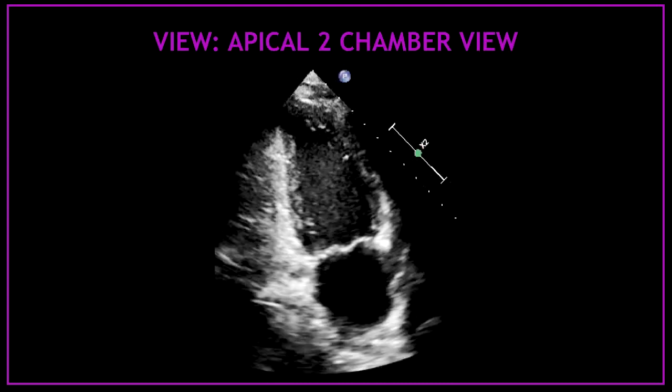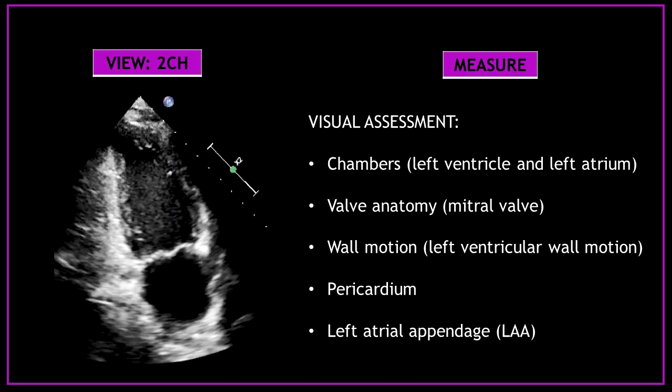Let's start with the apical 2 chamber view. First, obtain an apical 2 chamber view and perform a visual assessment of the cardiac chambers — the left ventricle and the left atrium. Also visually assess the mitral valve anatomy and the left ventricular wall motion. Don't forget to have a look at the pericardium and the left atrial appendage.